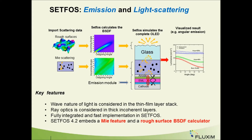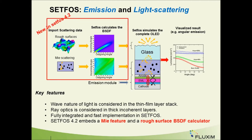This is how it works inside SETFOS. First, the user needs to import the scattering data, for example an AFM image of a rough surface or the optical properties of scattering particles. Then SETFOS will automatically compute the corresponding BSDF. These BSDFs are then passed to the core of the software, where the light propagation from the oscillating dipole inside the thin film stack is calculated. Finally, results like the luminance versus angle are automatically given as output. Importing an AFM picture and the Mie scattering feature are new in SETFOS 4.2, released in August 2015.